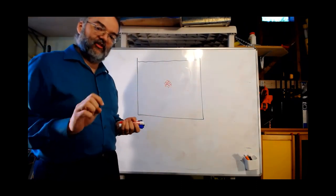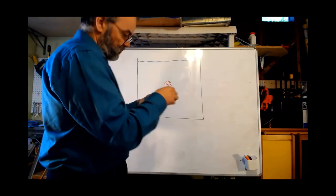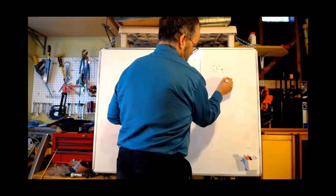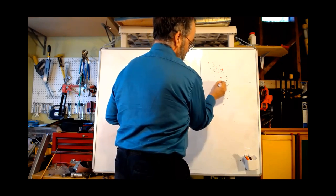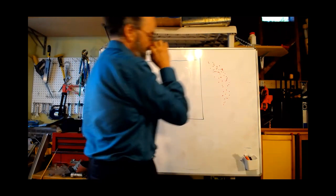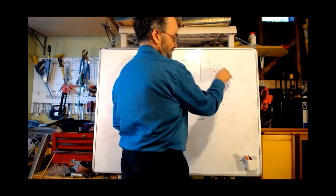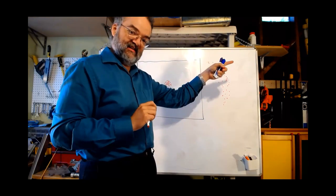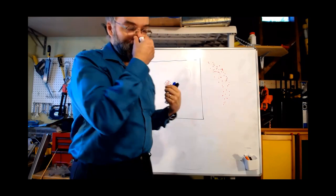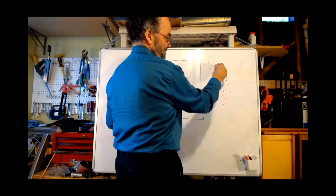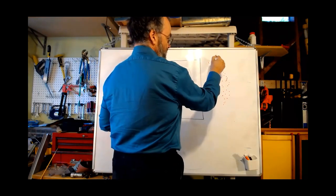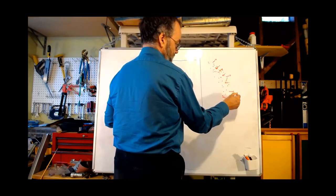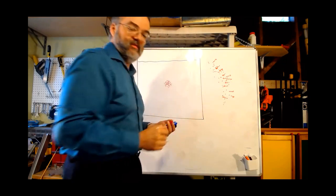Let's start from the assumption that the movement of every molecule is random. Drawing a close-up of the edge of the dye droplet — here's the center, and out here is the edge of it. Consider these molecules at the edge of the dye droplet. Since each is moving randomly, each has a 50% chance of moving away from the center and a 50% chance of moving toward the center.